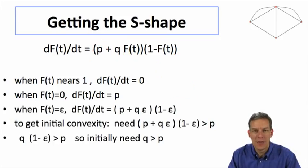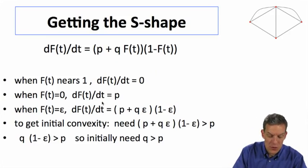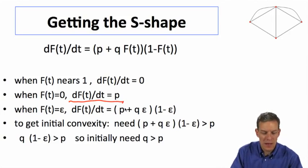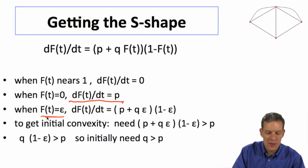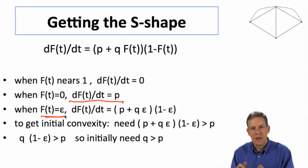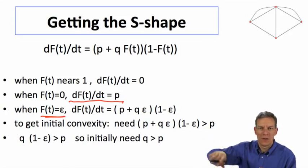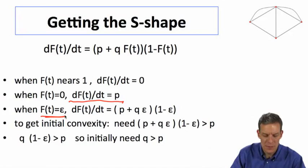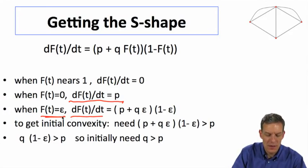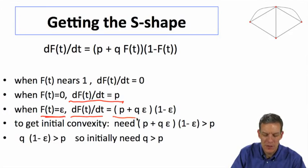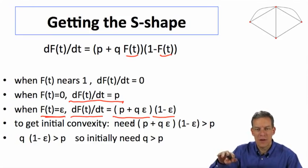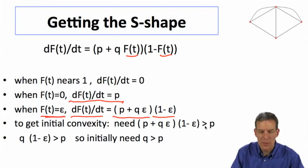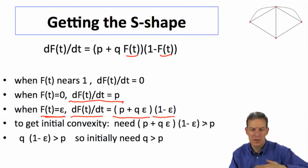And so we can analyze that by looking at this process close to zero. We know that the initial slope is p. So let's look at what happens with some small epsilon. So we've just started moving out. And we'll see whether we're going to start accelerating or not. Is it accelerating or is it going to be already decreasing in speed? So what does df/dt look like at some small epsilon? It's going to look like p plus q epsilon times one minus epsilon. So if you just plug in a small epsilon for this, you get this. To get the initial convexity, you need this thing to be bigger than p. We have to be accelerating. The slope started out at p. Now we have to be getting a slightly larger slope. So initially to get that S shape, you're going to have to have this be bigger than p.